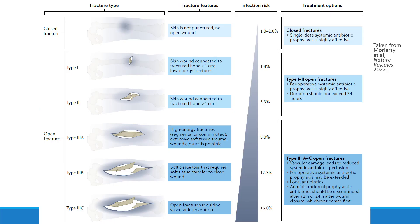Recent evidence suggests that open fractures can benefit from the addition of local antibiotics into the wound itself, via something like antibiotic cement. As fracture severity increases, your treatment algorithm should change: for closed fractures, a single dose of prophylactic antibiotics is usually effective; for type one and two open fractures, systemic antibiotic prophylaxis can be helpful for the first 24 hours; and for type three fractures, with tissue and vascular damage, systemic antibiotic prophylaxis is usually extended to 48 to 72 hours or until wound closure, with local antibiotics considered as an adjunct.